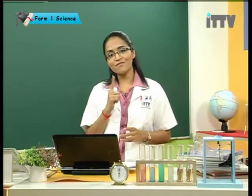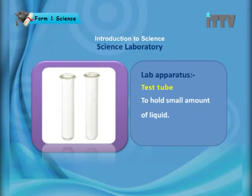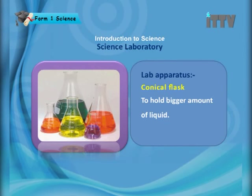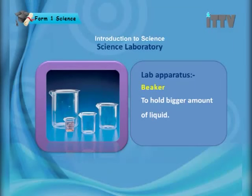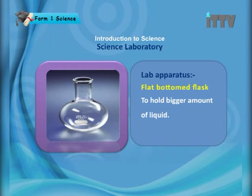So what can you find in the science lab? Apparatus — without apparatus, how can you carry out different types of experiments? Firstly, the test tube: its function is to hold a small amount of liquid. Next, the conical flask: to hold a bigger amount of liquid. We also have a beaker and a flat bottom flask, which similarly hold bigger amounts of liquid. Only the test tube holds a small amount.